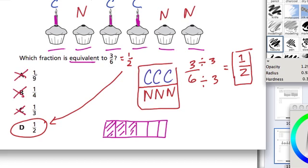So ninths are totally out of the question because those pieces would be much smaller than the pieces we're given here. There's no way that one-ninth, right, could equal three out of six.